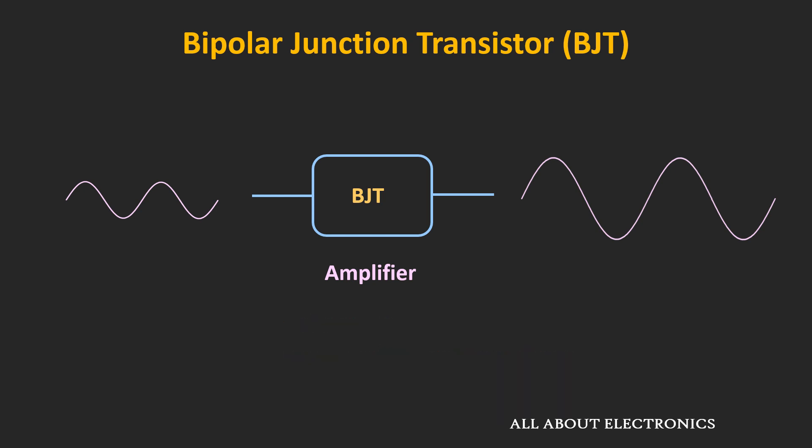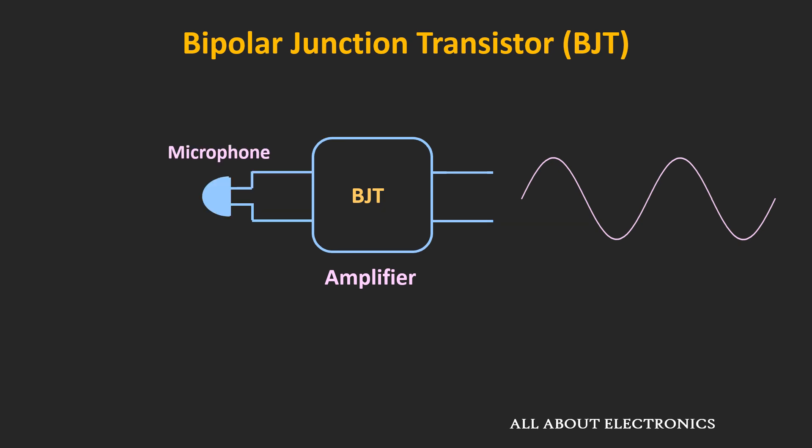During the small signal analysis, we are assuming that the input to the amplifier is very small, typically in the range of µV to mV. When the BJT is used as an amplifier or pre-amplifier, the input is coming from either a microphone or from an antenna.